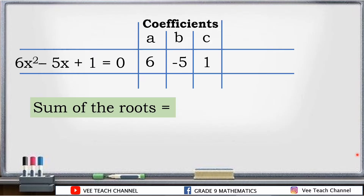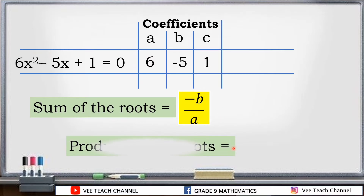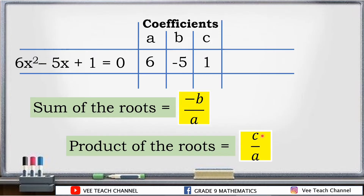To get the sum of the roots, we use the formula negative b over a — as simple as that, you just divide b by a. And for the product of the roots, the formula is c over a: get the quotient of c and a.